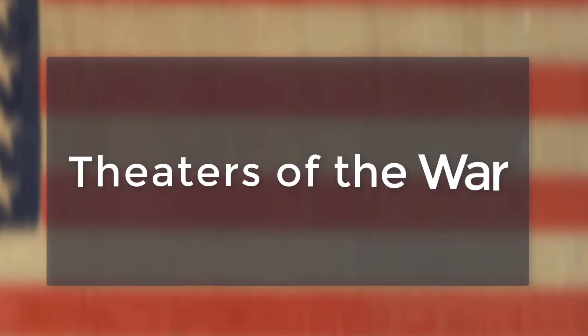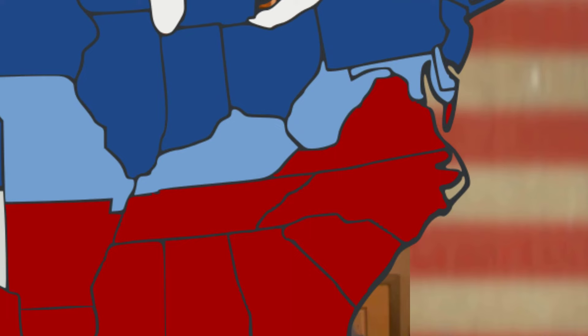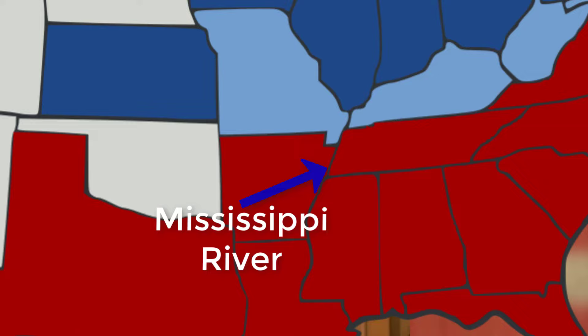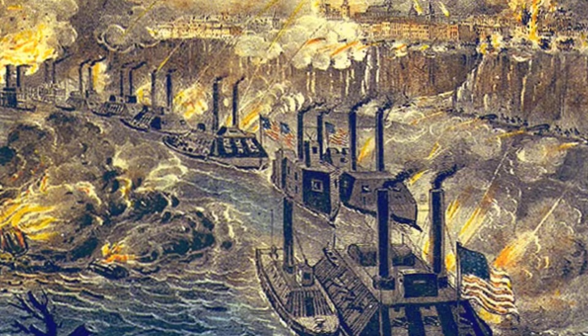Now, the theaters of the war. When you hear 'theaters of the war,' we're not talking about going to a show — rather, this focuses on different goals for the Union during the war. The Eastern Theater was basically the fight to capture Richmond, with major battles such as Antietam, Chancellorsville, and Gettysburg. The Western Theater focused on control of the Mississippi River, with major conflicts such as Shiloh and Vicksburg.